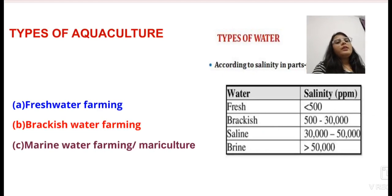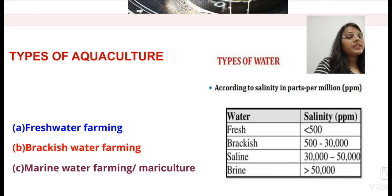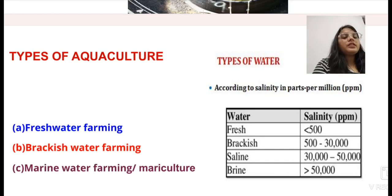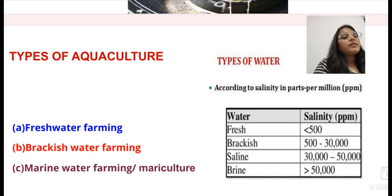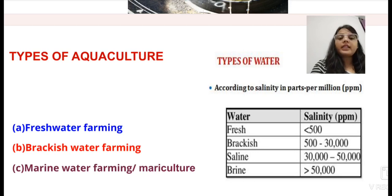Now, the types of aquaculture. First, we should know the types of water. According to salinity, there are four types of water: if salinity is below 500, that is freshwater; if salinity is between 500 to 30,000, that is brackish water; if salinity is between 30,000 to 50,000, that is saline water; and if salinity is above 50,000, that is called brine water. So there are three types of farming systems according to water type: freshwater farming, brackish water farming, and marine water farming.